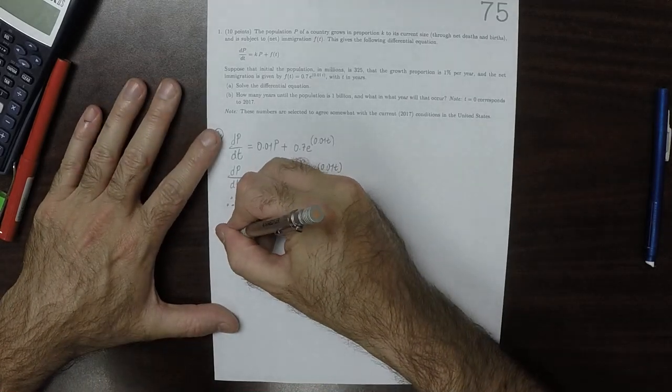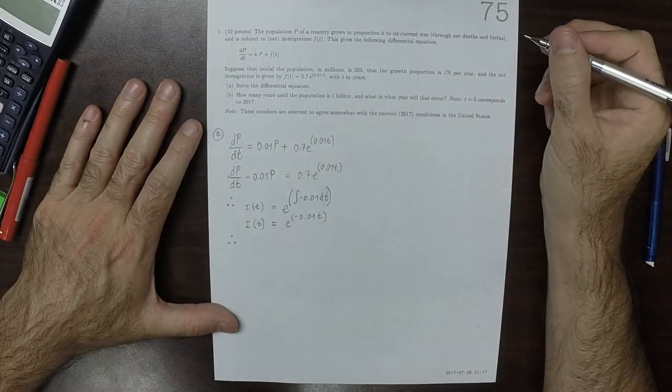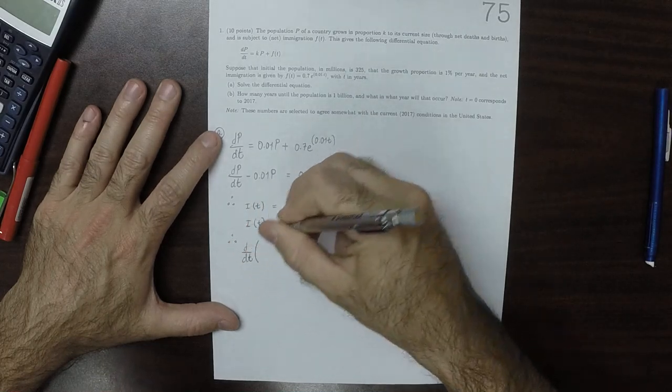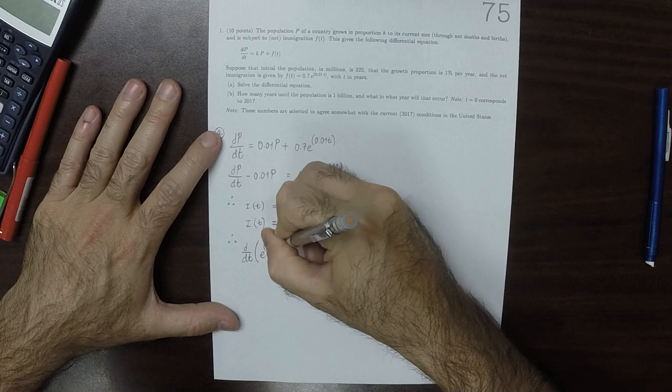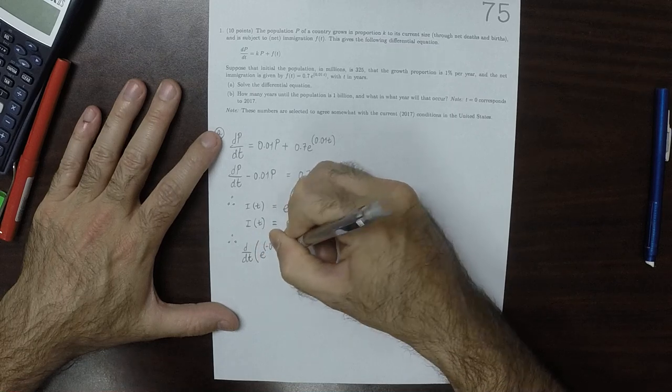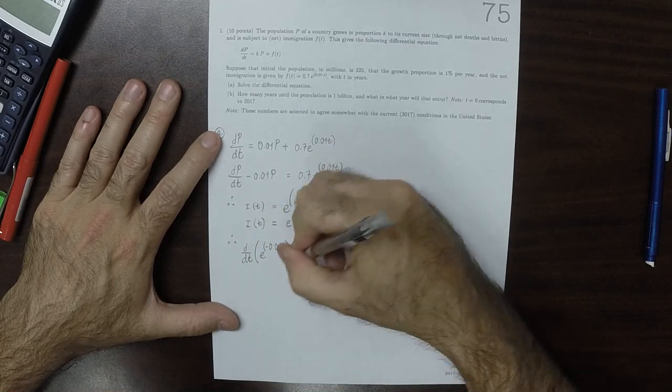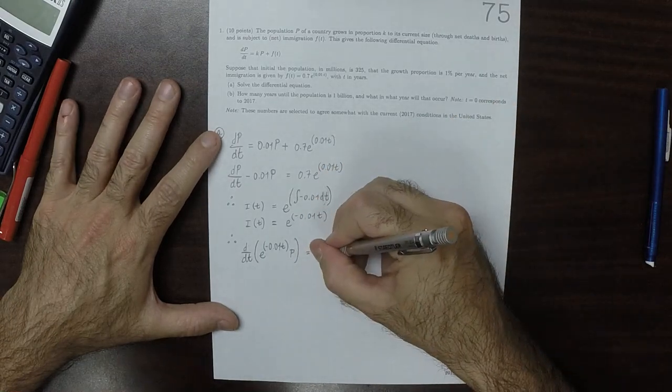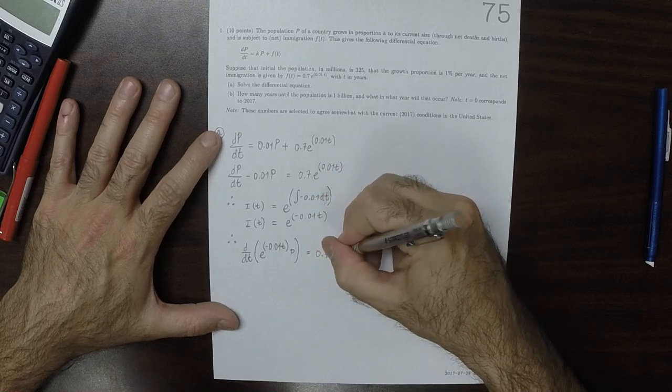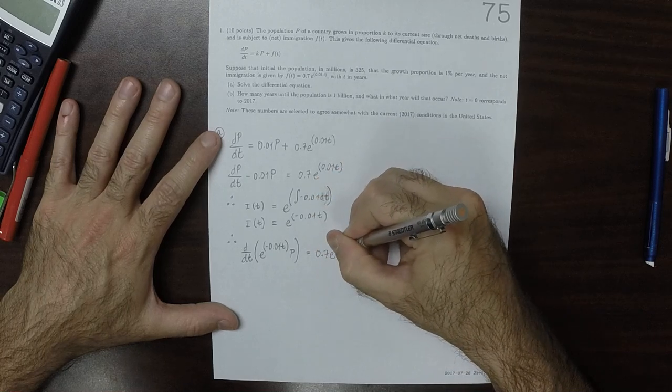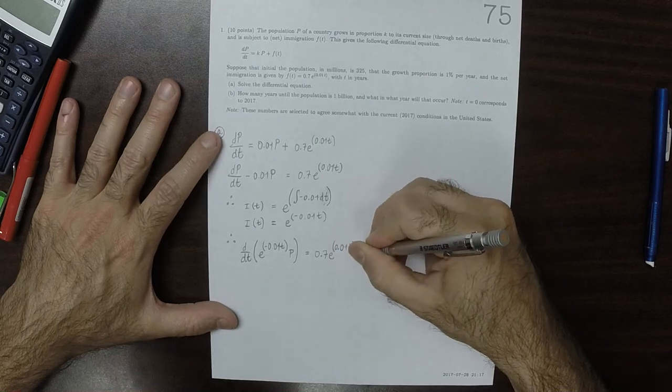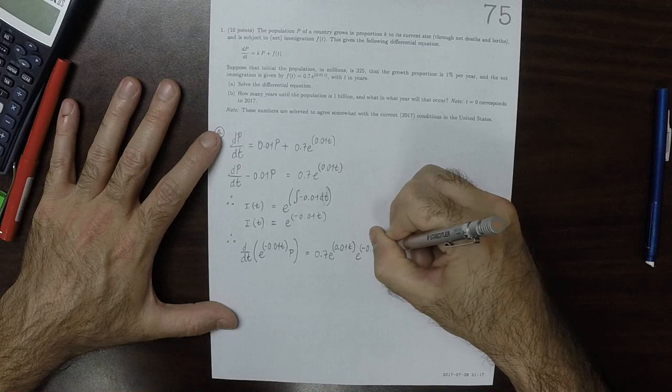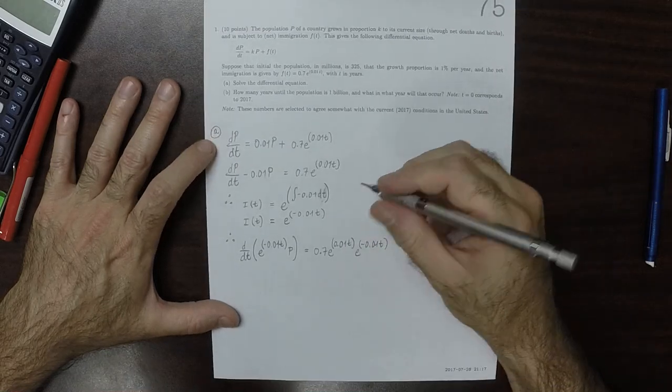As a result, the derivative of the integrating factor e^(-0.01t) times p should be 0.7e^(0.01t) times the integrating factor e^(-0.01t). Those cancel away.